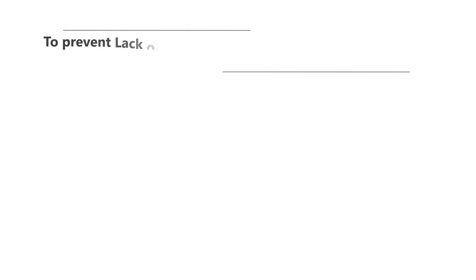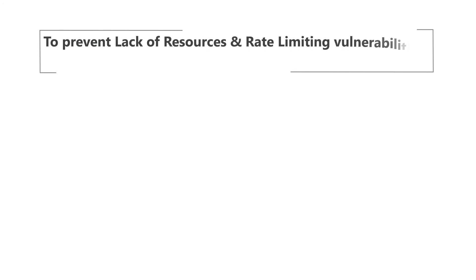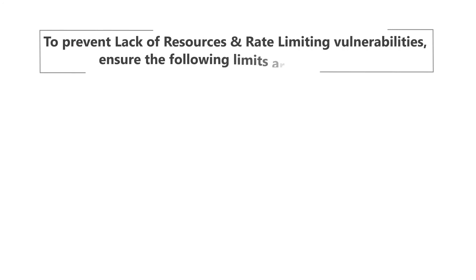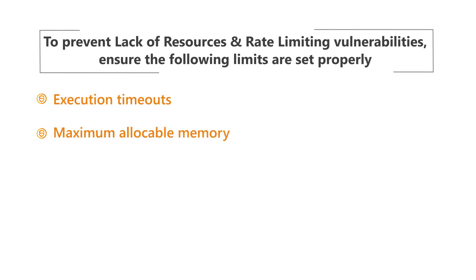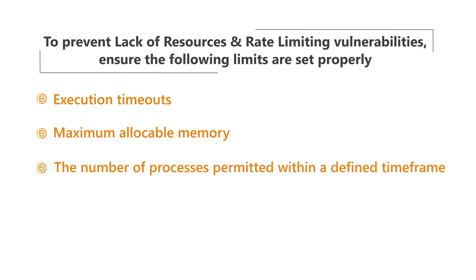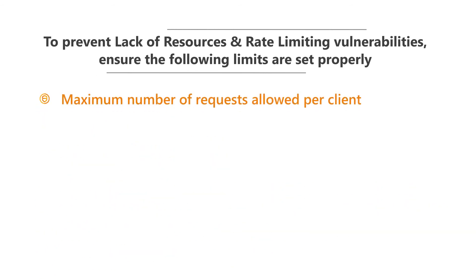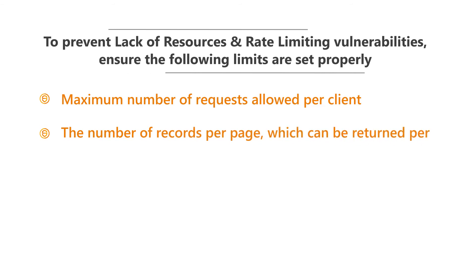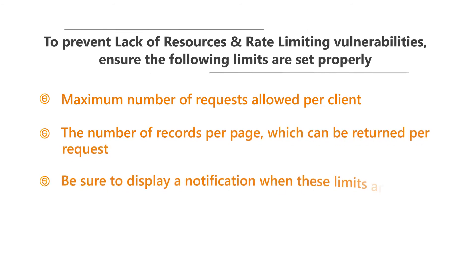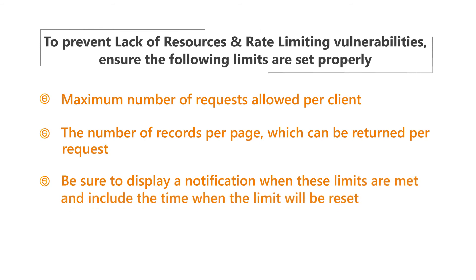To prevent lack of resources and rate-limiting vulnerabilities, ensure the following limits are set properly: execution timeouts, maximum allocable memory, the number of processes permitted within a defined timeframe, maximum number of file descriptors, maximum number of requests allowed per client, and the number of records per page which can be returned per request. Be sure to display a notification when these limits are met and include the time when the limit will be reset.